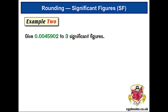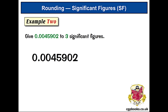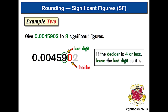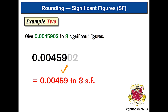Give 0.0045902 to three significant figures. We've got some zeros at the beginning which we ignore, so the first significant figure is four. Counting on to the right, the second significant figure is five, and the third is nine, which makes nine the last digit we want. The decider is zero, and we can ignore the two. When the decider is four or less, we leave the last digit as it is, so nine stays put. Our answer is 0.00459.